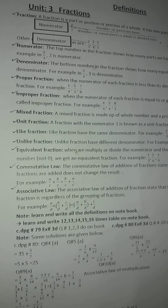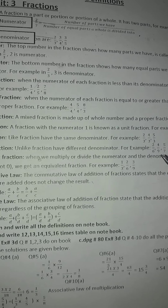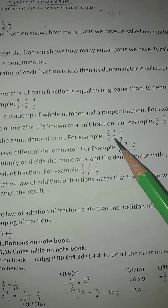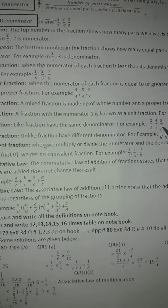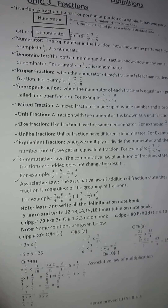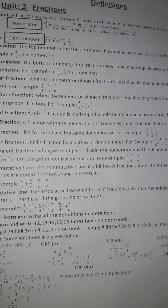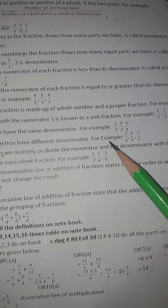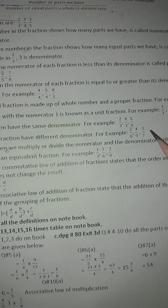Like fractions have the same denominators. When all fractions have the same denominator, they are called like fractions. Unlike fractions have different denominators. For example, two over six, four over nine, five over seven — all these fractions have different denominators, so they are unlike fractions.